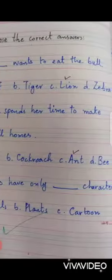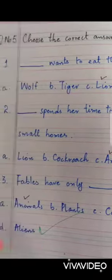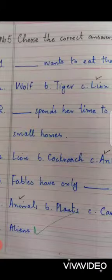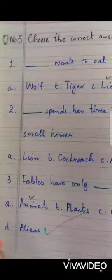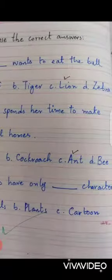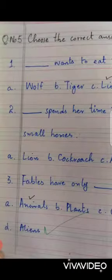Number three: fables have only blank character. Options: animals, plants, cartoon, aliens. Correct option is animals.